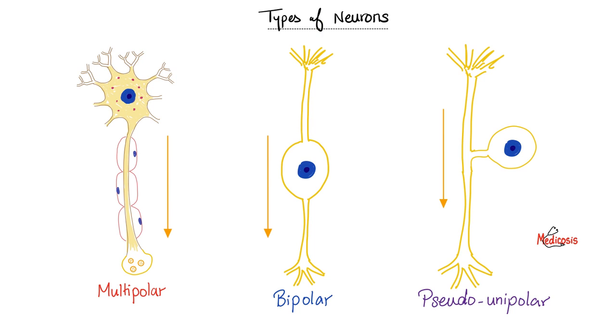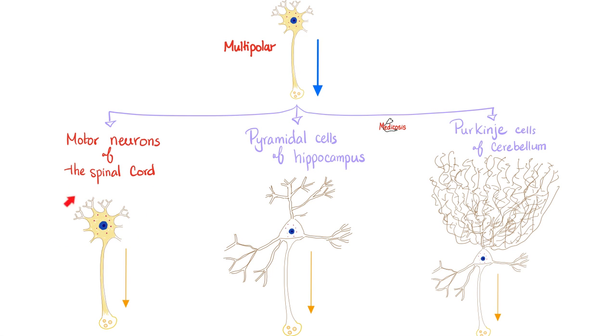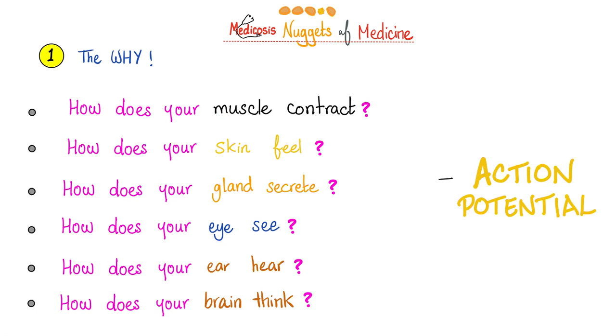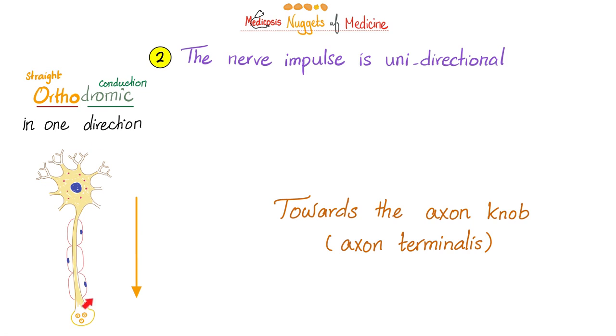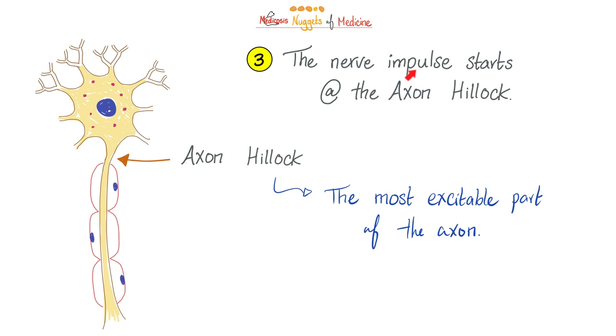Types of neuron. You have pseudounipolar, bipolar, multipolar. And the multipolar has different shapes, including the motor neurons of the spinal cord, pyramidal cells of the hippocampus, and the Purkinje cell of the cerebellum. When your muscles contract, when your skin feels, when your glands secrete, when your eyes see, when you hear, all of this is basically action potential. The nerve impulse is unidirectional. We call it orthodromic. The nerve impulse starts at the axon hillock, the most excitable part of the axon.